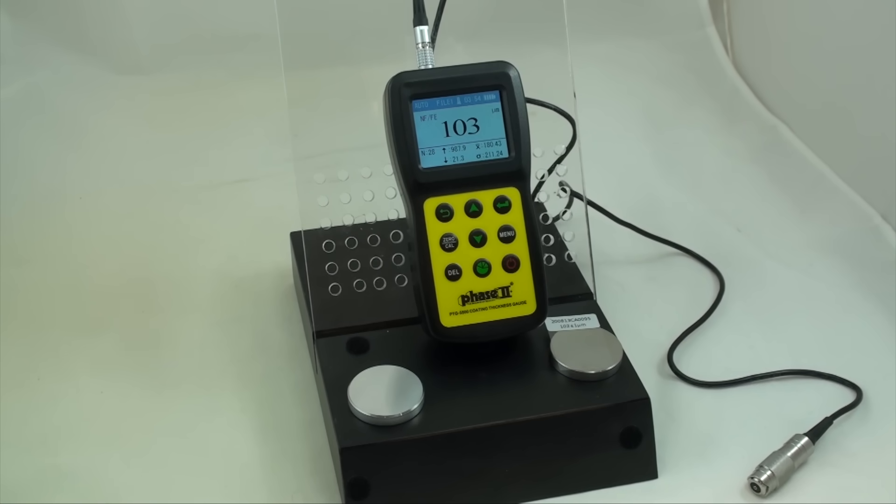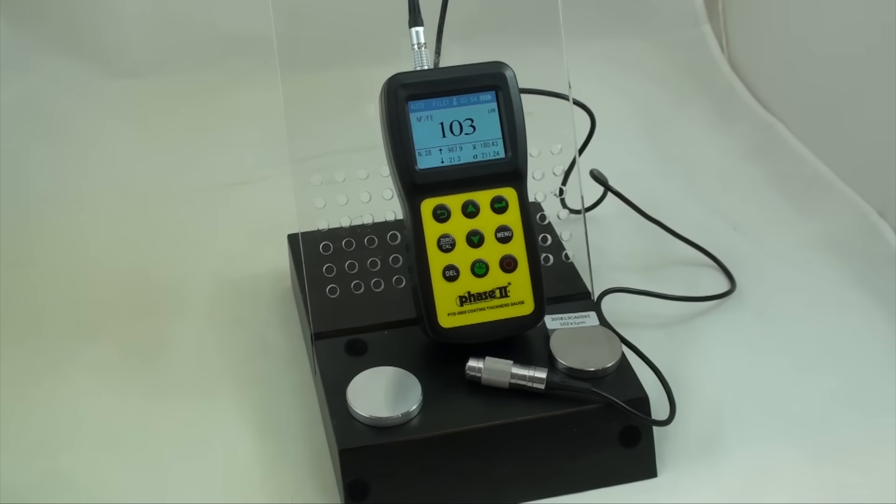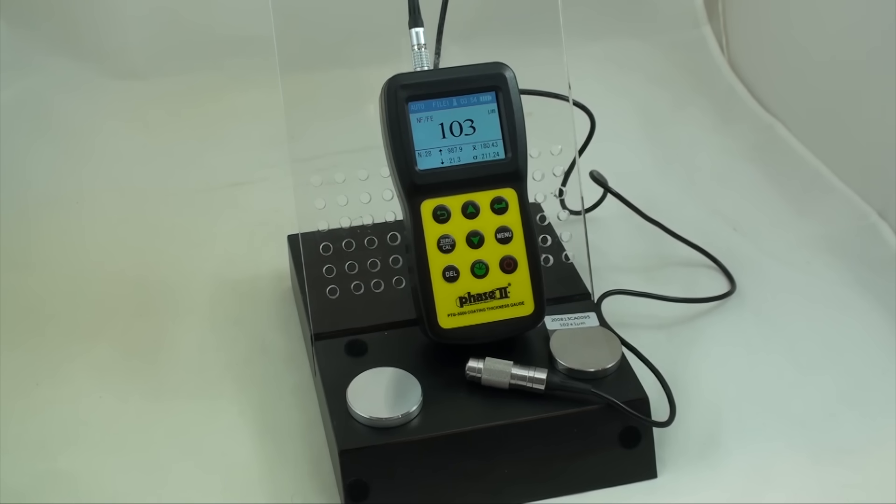This is an instructional video detailing the applications and functions of the Phase II PTG 5500 coating thickness gauge. These coating thickness gauges are designed to test non-magnetic coatings on both ferrous and non-ferrous metals. The technology is based on a single multi-purpose probe that combines both eddy current and magnetic induction capabilities in order to auto-detect ferrous or non-ferrous substrates.